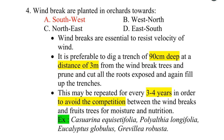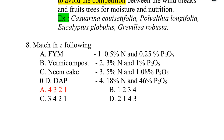Fourth one. Windbreaks are planted in orchards towards the south-west direction. Windbreaks are essential to resist the velocity of wind. It is preferable to dig a trench of 90 cm deep at a distance of 3 m from the windbreak trees, prune and cut all exposed roots, and fill up the trench again. This should be repeated every 3 to 4 years to avoid competition between windbreaks and fruit trees for moisture and nutrition. Examples of windbreaks: Casuarina equisetifolia, Polyalthia longifolia, Eucalyptus globulus, Grevillea robusta.